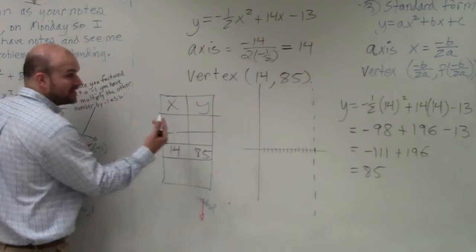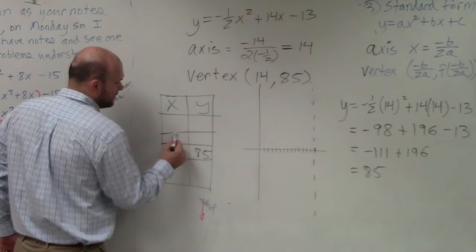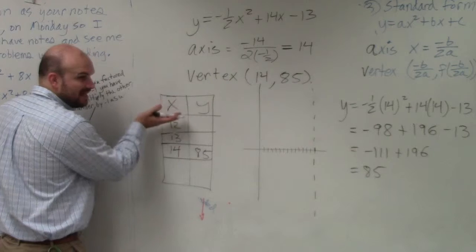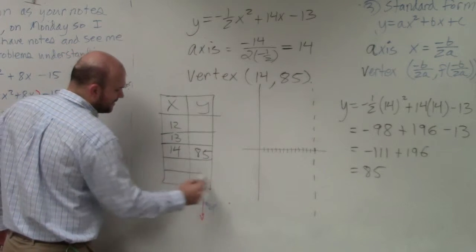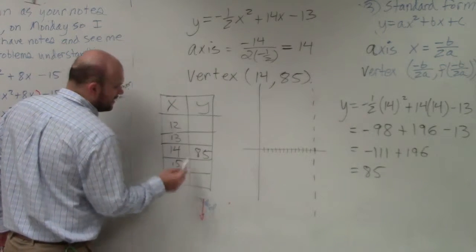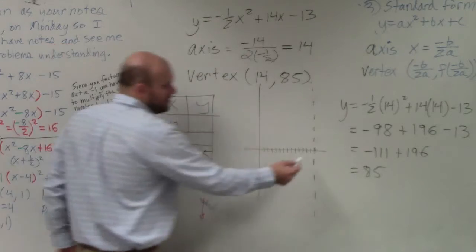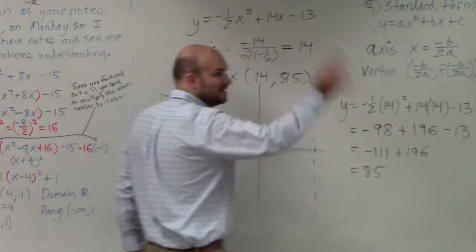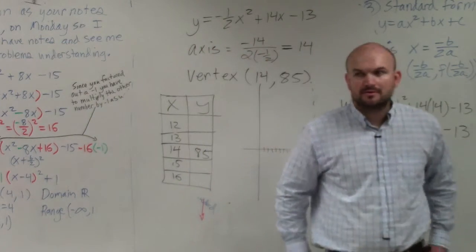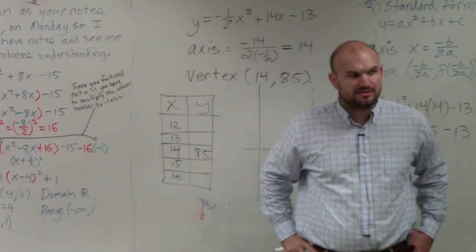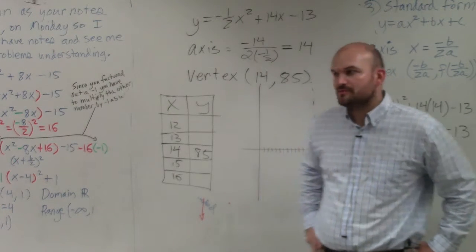So if we were going to graph this, I would just pick two points to the left, and maybe I'd pick two points to the right. And I would just plug in these two points, figure out what they look like, and then I can go ahead and graph them. Does that make sense? We're going to do some practice with these.